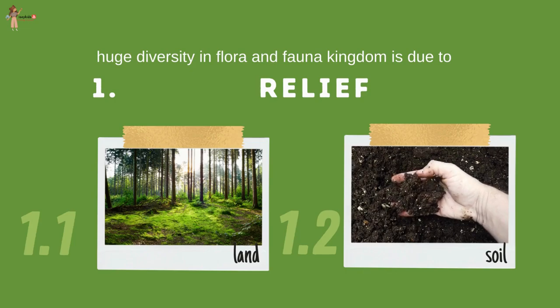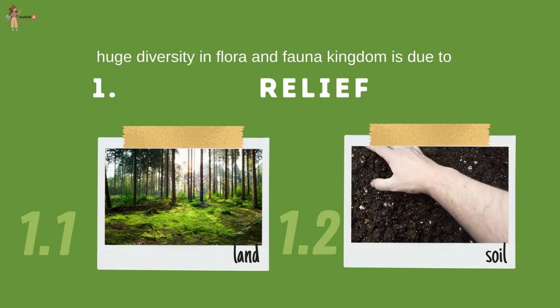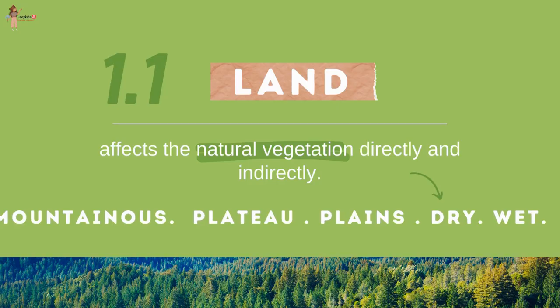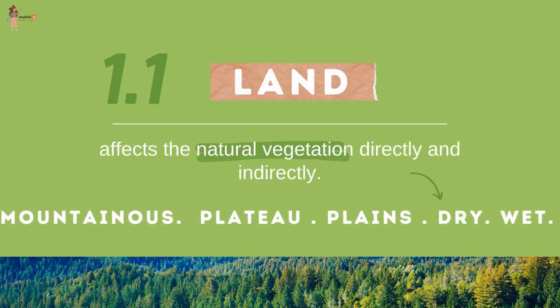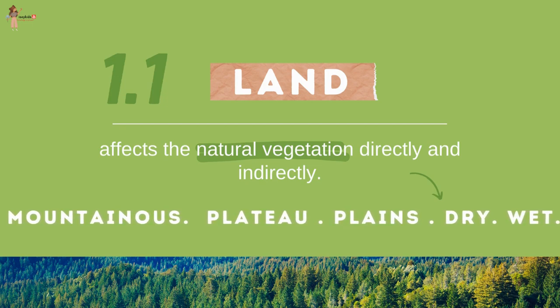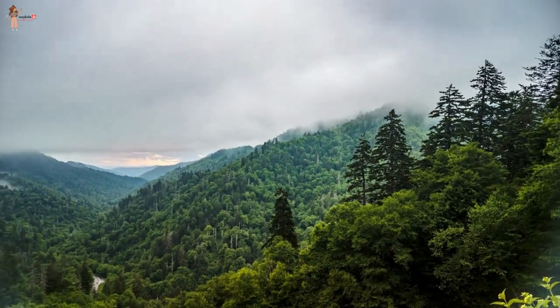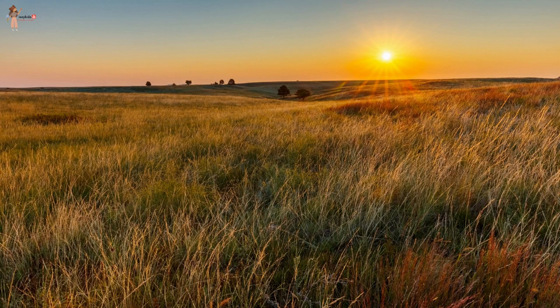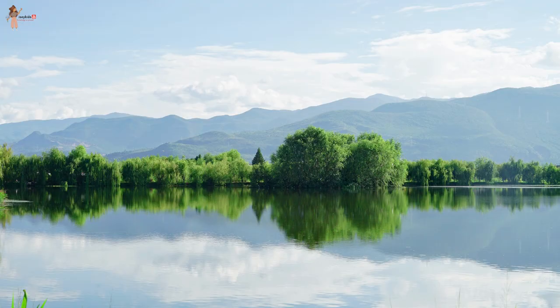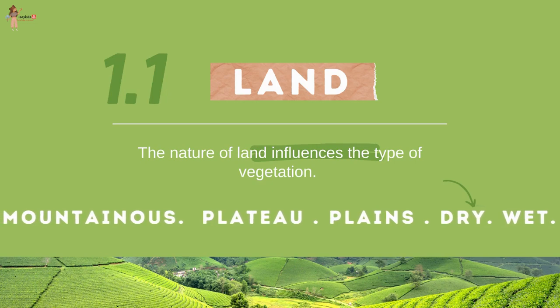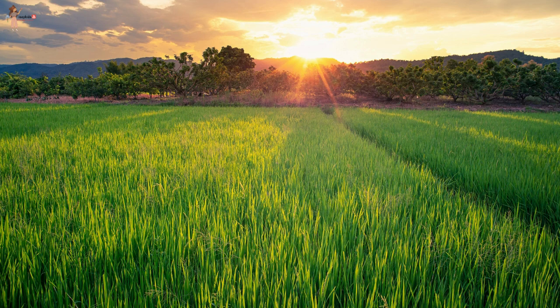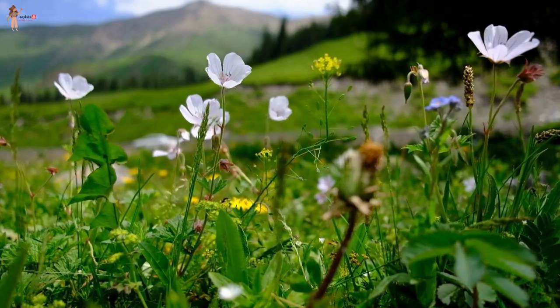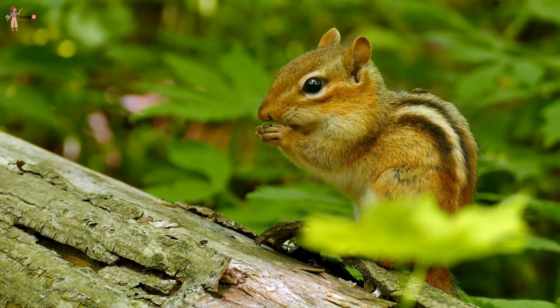This huge diversity in flora and fauna is due to the following factors. The first is relief, which includes land and soil of the area. Land affects natural vegetation directly and indirectly. The nature of land influences the type of vegetation — fertile level land is generally devoted to agriculture, while undulating and rough terrains are areas where grasslands and woodlands develop and give shelter to a wide variety of wildlife.